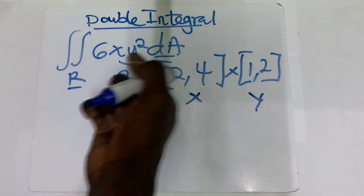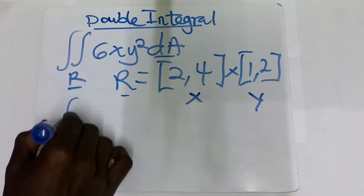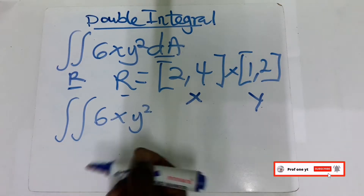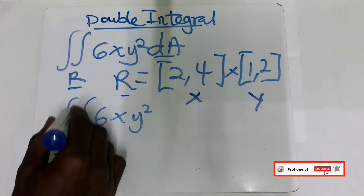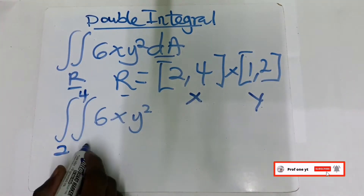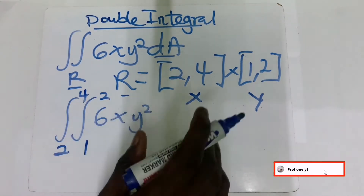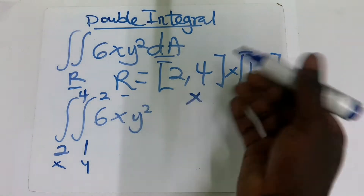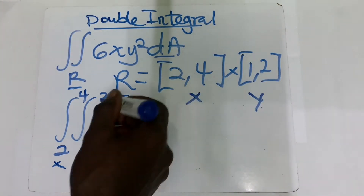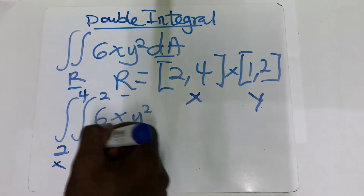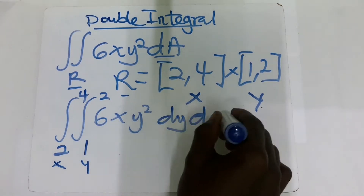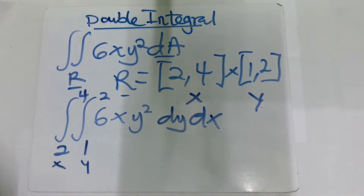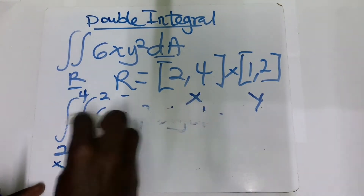When arranging this, we set up the integral with limits 1 to 2 on the outside and the integrand 6xy². The x value starts at 2 and ends at 4, and the y value starts at 1 and ends at 2. When writing dx and dy, you start from the inside — this is y, so dy, and the outer becomes dx. Then you take it one by one and solve.